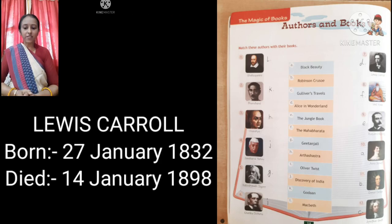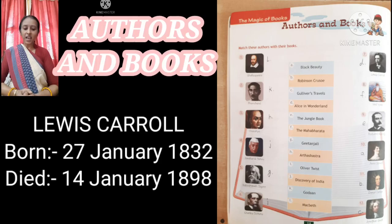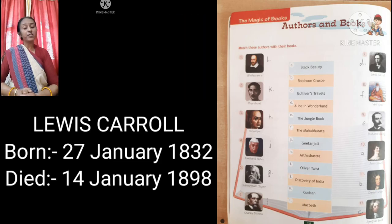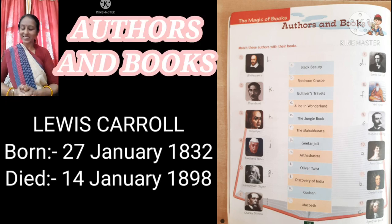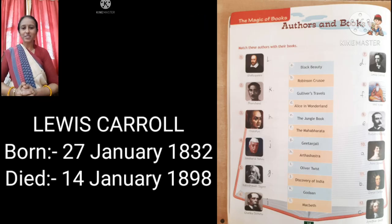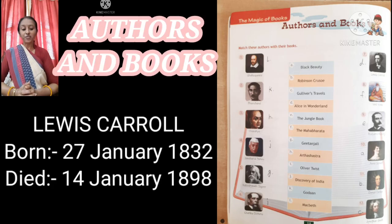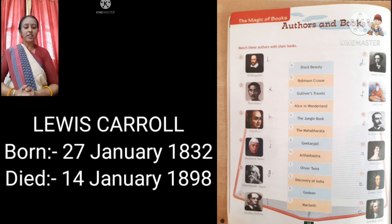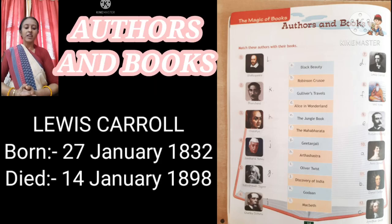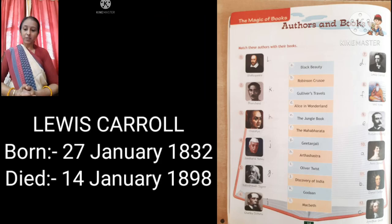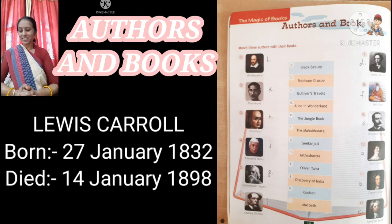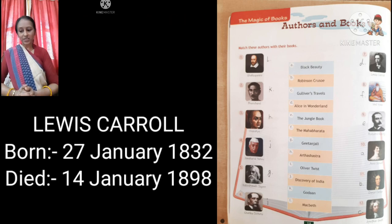The seventh one is Lewis Carroll. Lewis Carroll is an English writer of children's fiction. Children always love to live in an imaginary world, and Lewis Carroll wrote about this children's fiction. He was born on 27th of January 1832 and died on 14th of January 1898. The name of his book is Alice in Wonderland — obviously, this is for children.